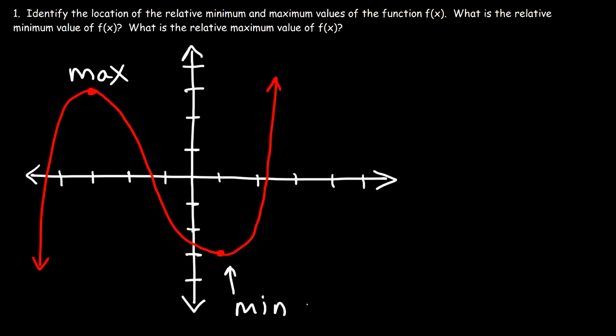Now the location of these values is associated with the x values. So we have a relative max at x equals negative 3, and we have a relative min at x equals 1.